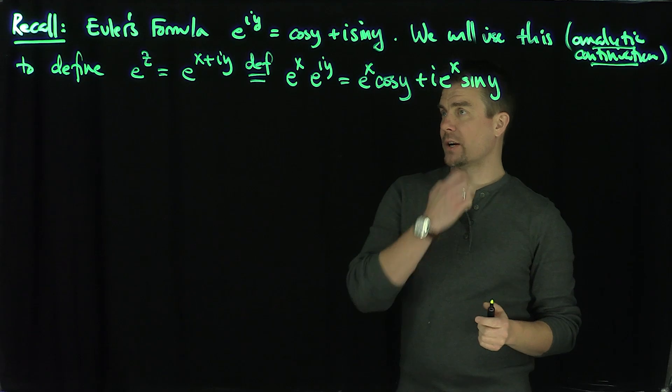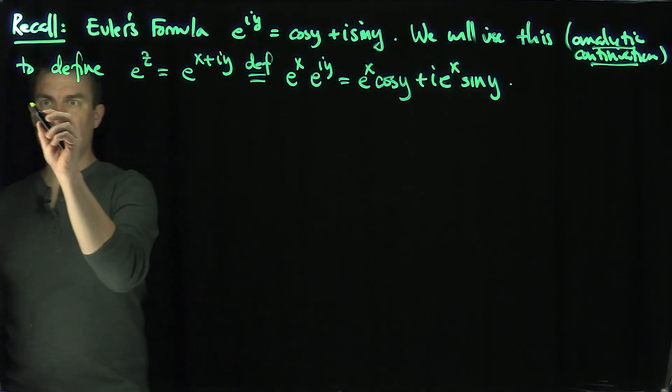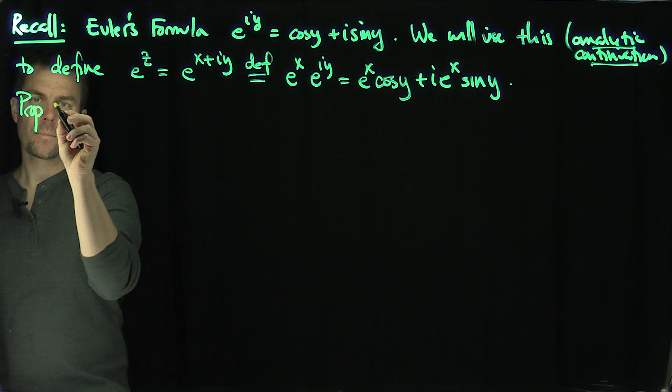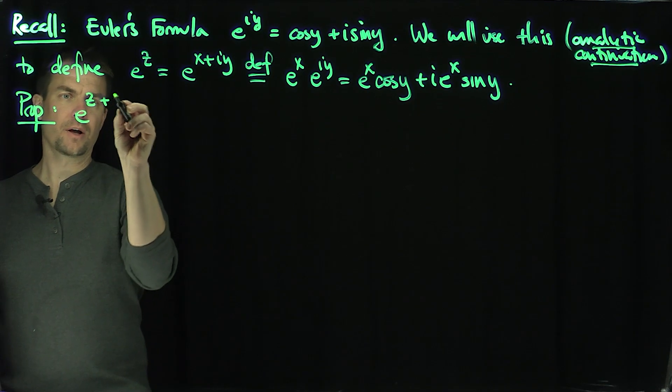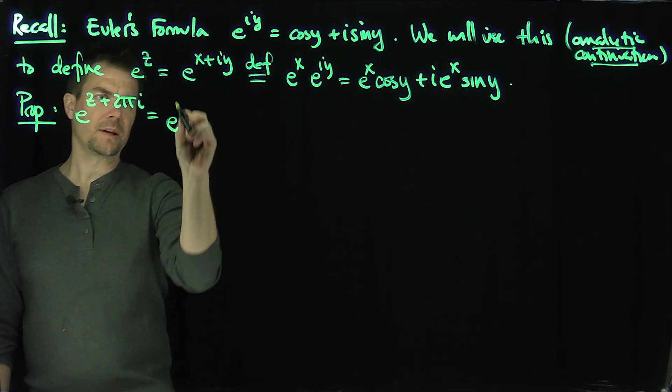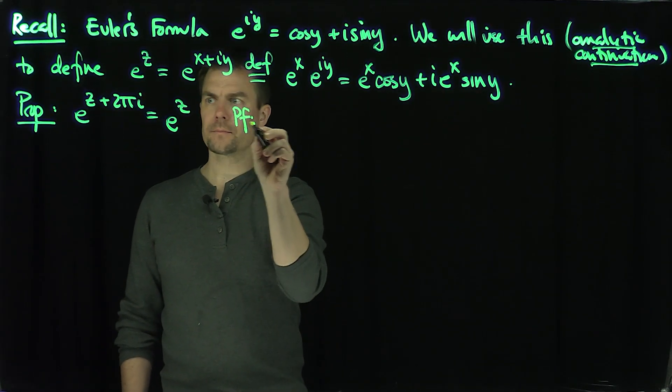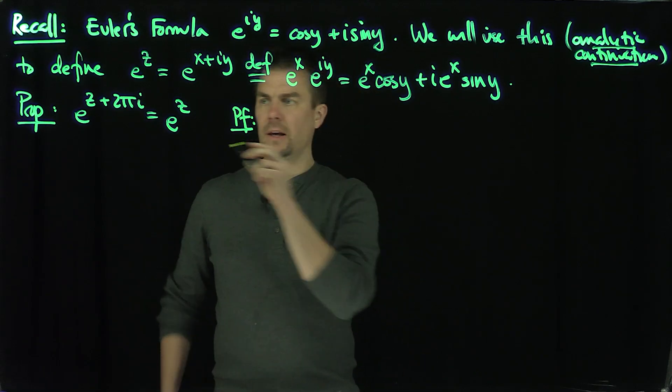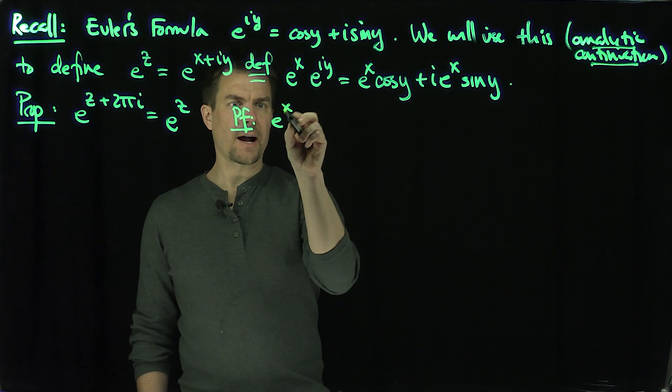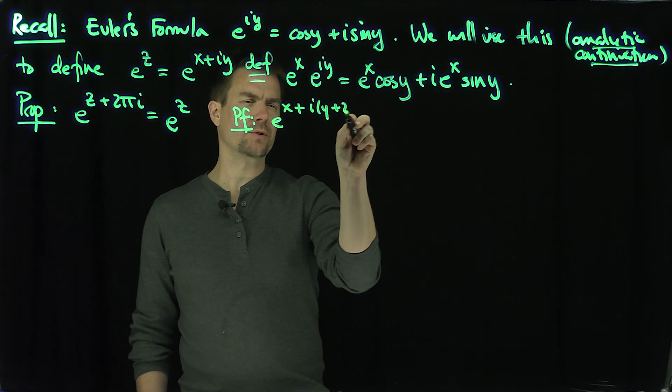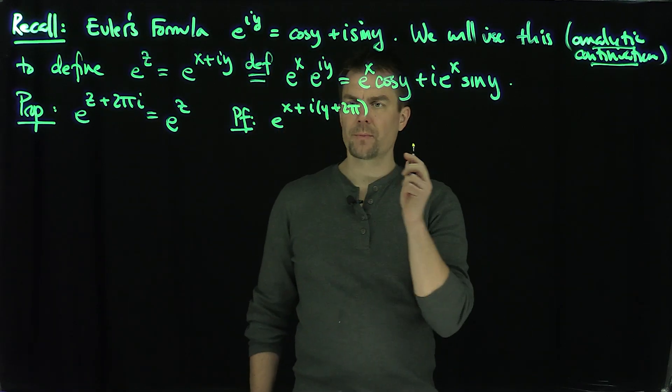Now what are some properties of e^z? Here's a proposition: e^(z+2πi) equals e^z. The proof is straightforward. This is going to be e^(x+i(y+2π)), which is e^x times cosine(y+2π) plus i times e^x times sine(y+2π).